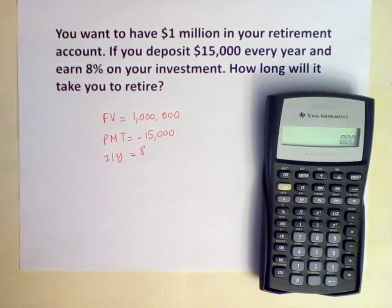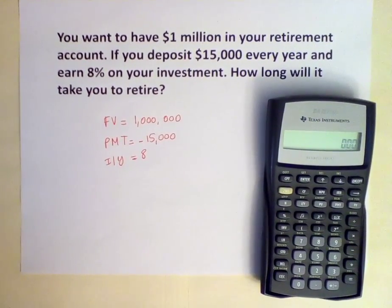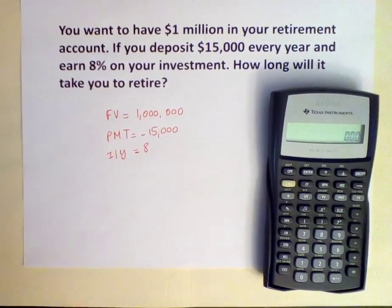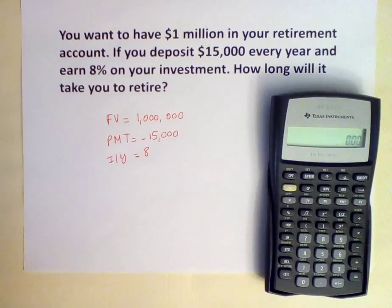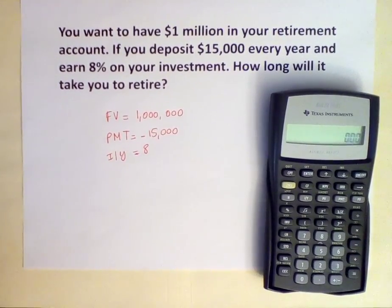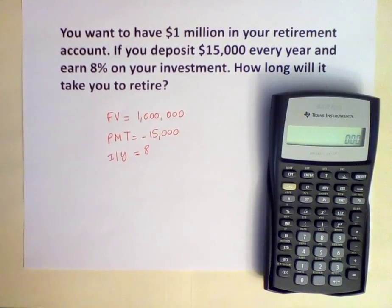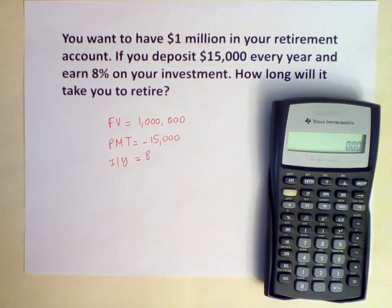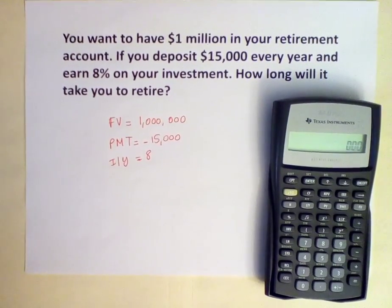You want to have $1 million in your retirement account. If you deposit $15,000 every year and earn 8% on your investment, how long will it take you to retire? This is an annuity problem where we are trying to determine how long it will take us to achieve a certain future value given a certain interest rate and a deposit amount.